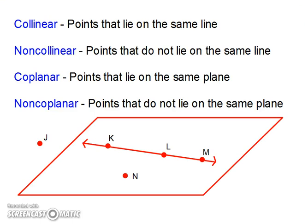A few more vocabulary terms. Collinear, points that lie on the same line. So like K, L, and M are collinear points. Non-collinear are points that do not lie on the same line, like K, N, L, or M, N, K.